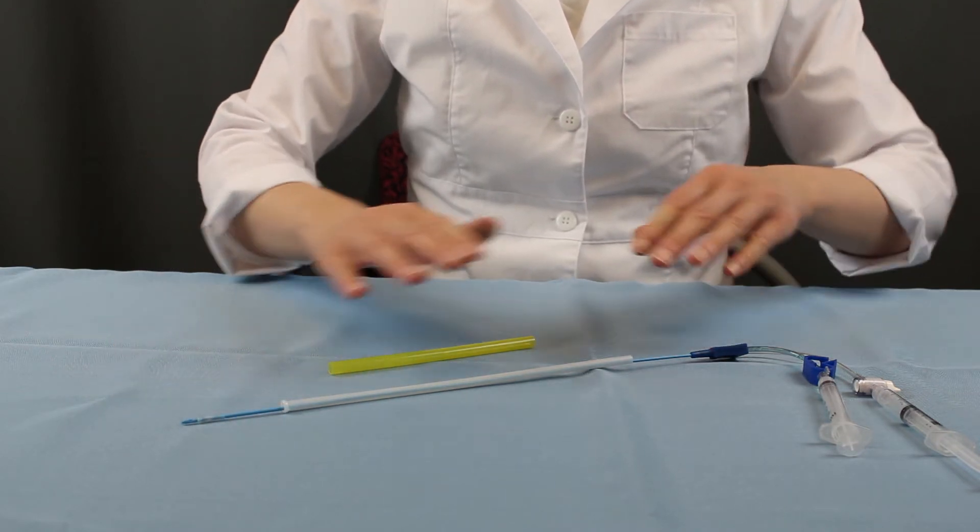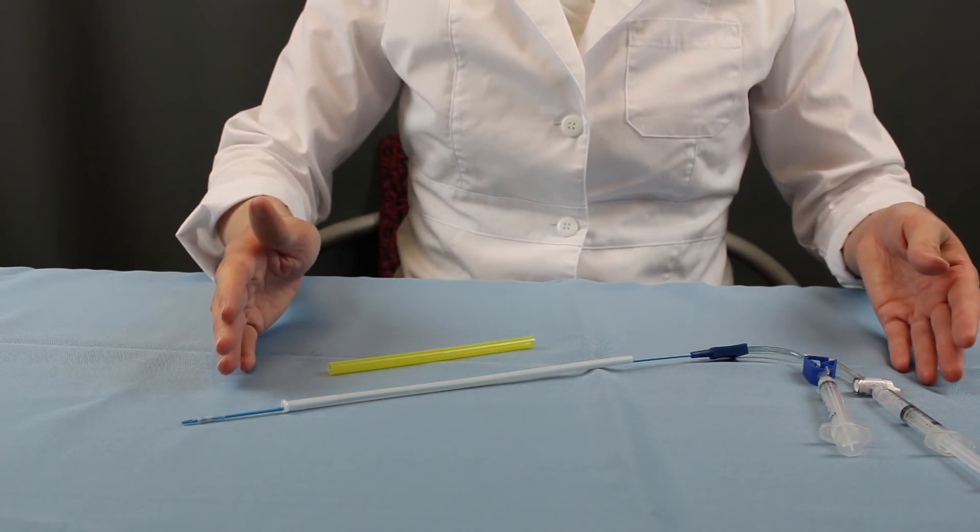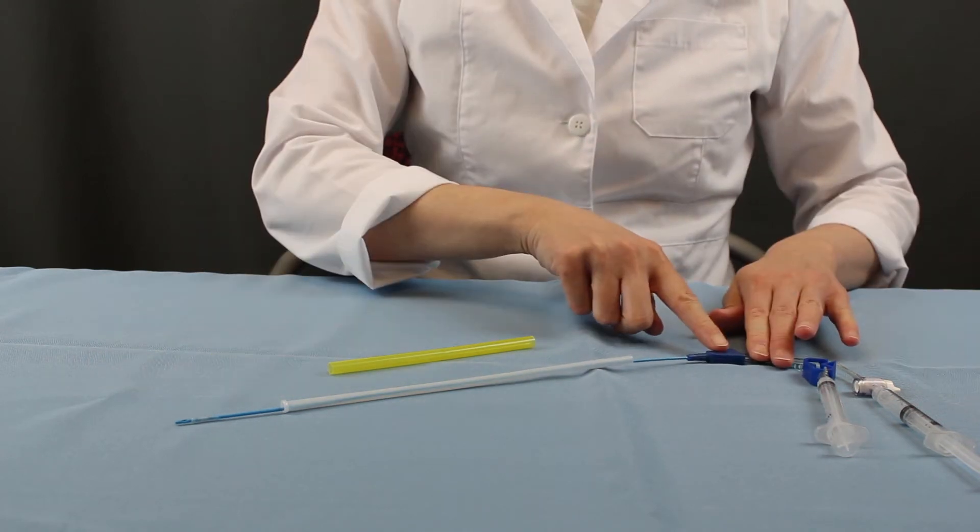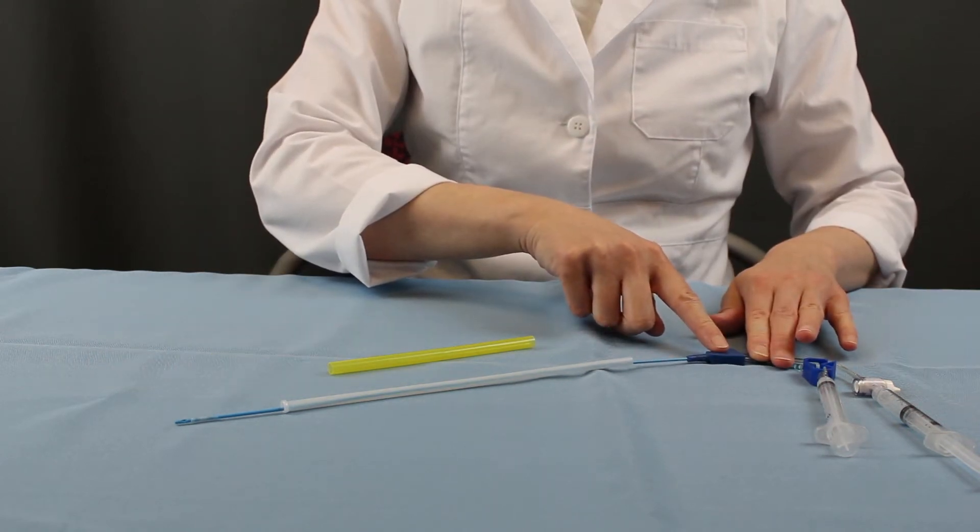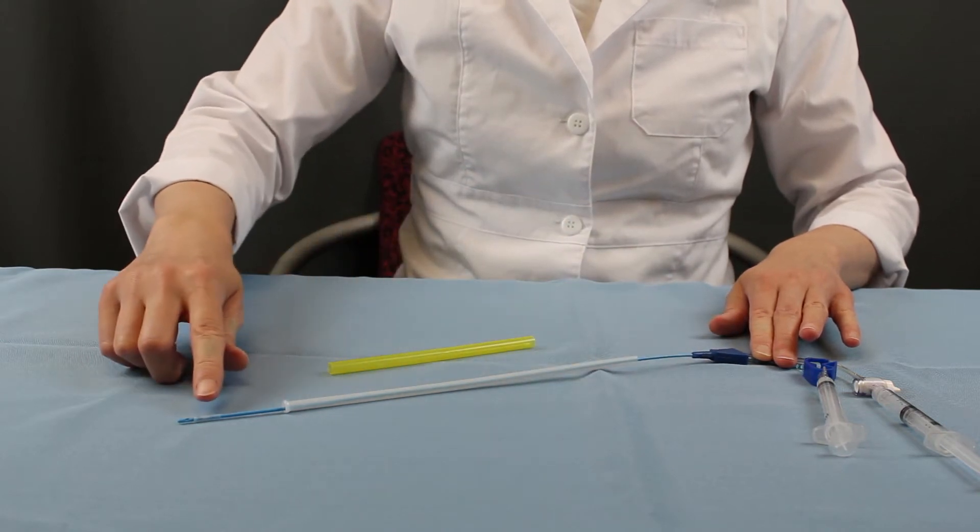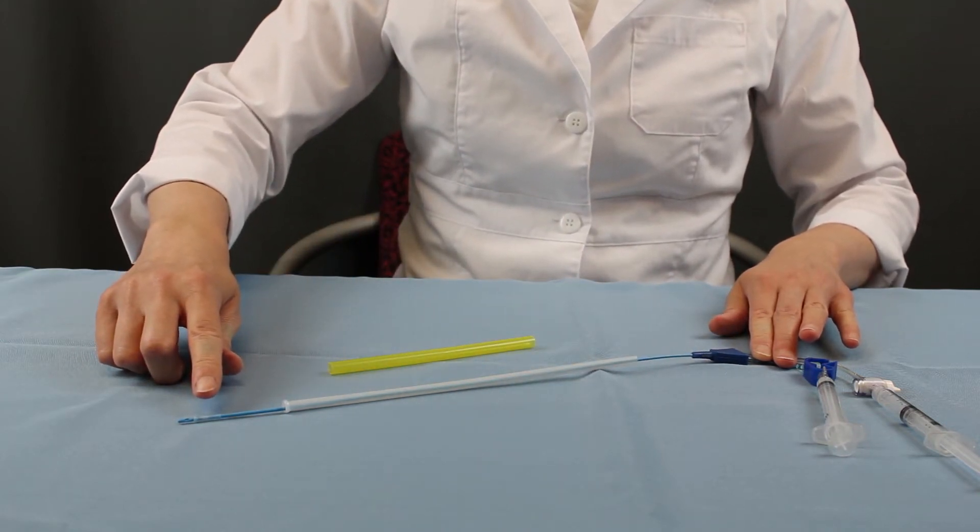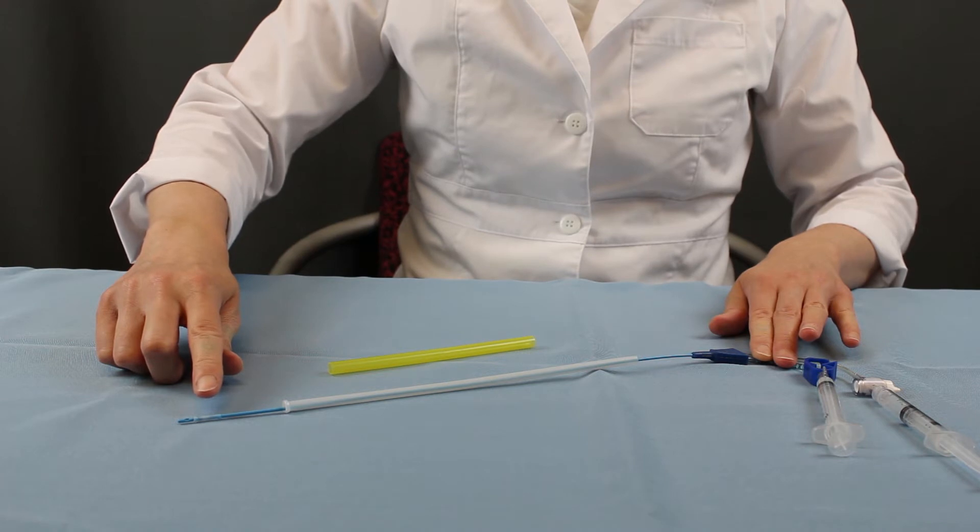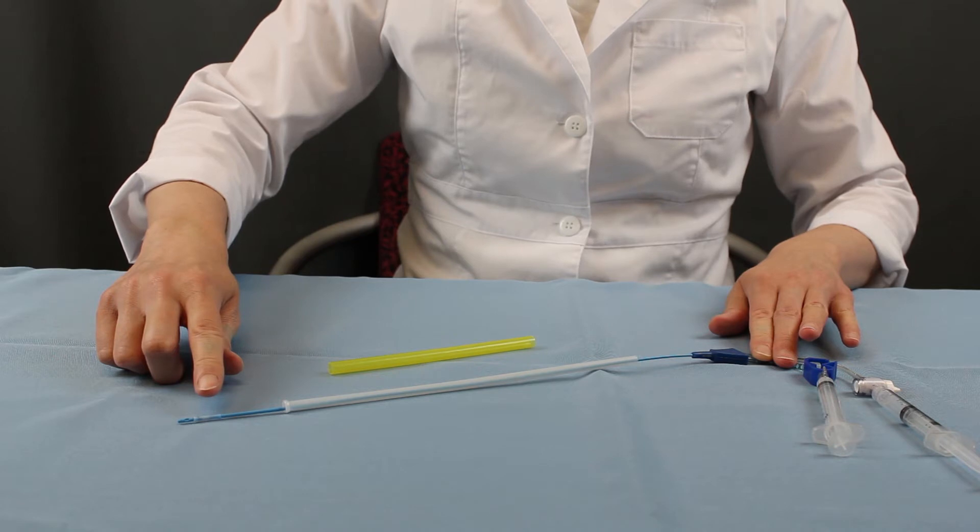To ensure integrity, 100% of HSG catheters are quality checked. The junction is tested to ensure a leak-free connection and every balloon is tested for inflation and concentricity, ensuring a proper seal with the internal cervical os and eliminating the need to prime the balloon.